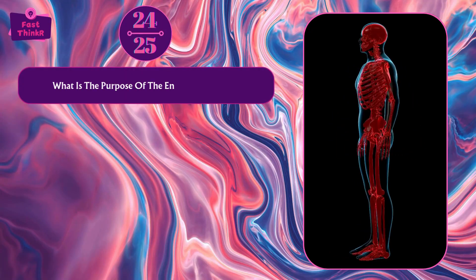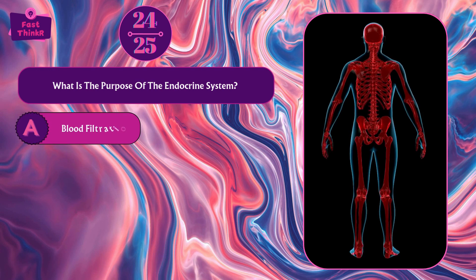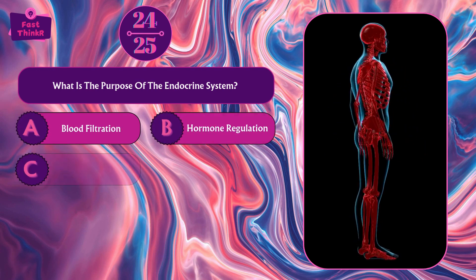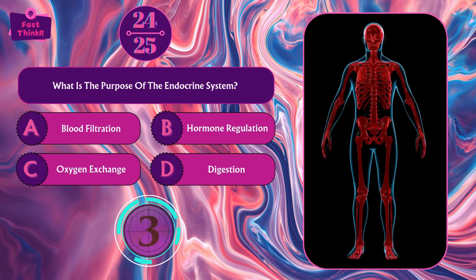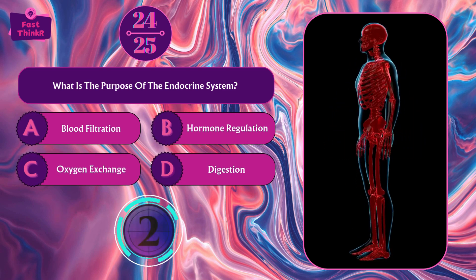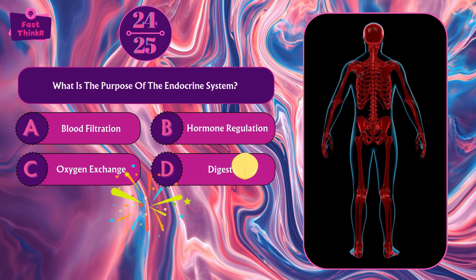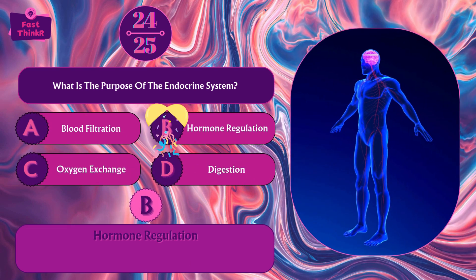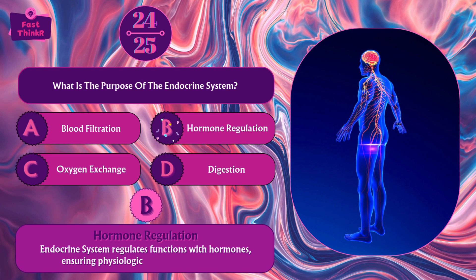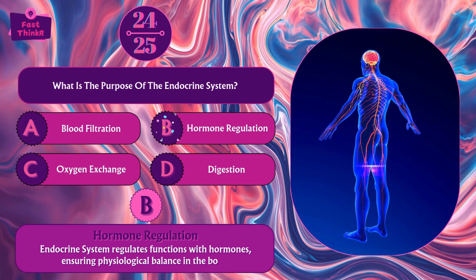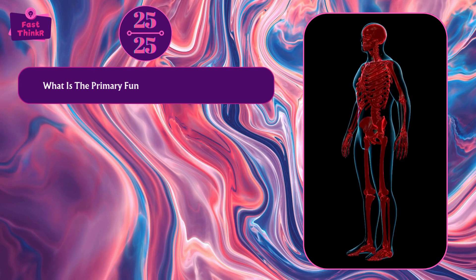What is the purpose of the endocrine system? Blood filtration, hormone regulation, oxygen exchange, or digestion? Option B — hormone regulation. The endocrine system regulates body functions with hormones, ensuring physiological balance.